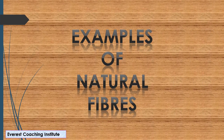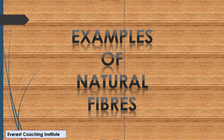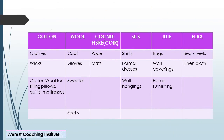We have discussed questions in this paper — what are the examples of natural fibers? We give different types of fibers and examples. I want to tell you about this table. I have taken six types of fiber fabrics: cotton, wool, coconut fiber, silk, jute, and flax.